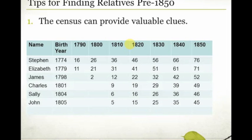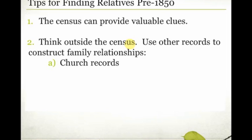Now you need to think outside the census. The census is not the be-all end-all of research — it's a great foundation, but there are other records you can use to construct family relationships. Most states in the United States did not keep civil records of births, marriages, and deaths in the mid to early 1800s, but church records can provide a really valuable resource. They'll have records of christenings, marriages, and burials, handled at an ecclesiastical level. Use information about your family's religion to search for church records in those locations.